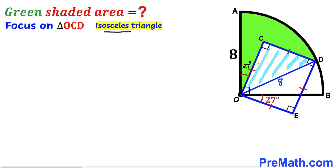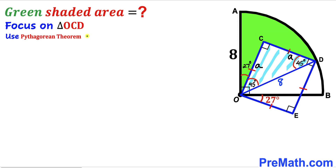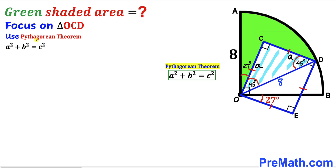So if one leg is lowercase a, then the other leg is lowercase a as well. Since this is an isosceles right triangle, each base angle is 45 degrees. Now we apply the Pythagorean theorem: a² + b² = c². In our case the hypotenuse is 8 and the two legs are both lowercase a, so we get a² + a² = 8².